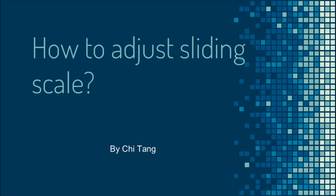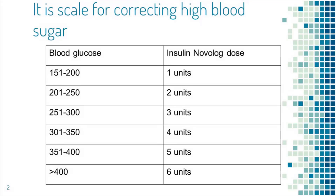In this video we'll talk about how to adjust sliding scale. What is sliding scale? It is a scale that helps you decide the right insulin dose for high blood sugar.